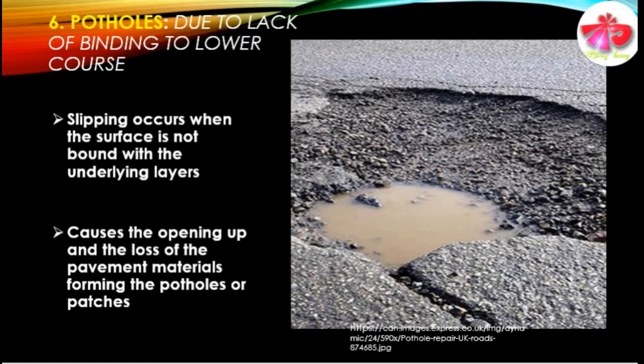The sixth type of defect in the flexible pavement is the formation of potholes. Potholes are formed due to lack of binding to the lower courses. Slipping occurs when the surface course is not keyed, that is not bound with the underlying base, resulting in the opening and loss of pavement materials forming patches and potholes. These conditions are more frequent when bituminous surfacing is provided over existing cement concrete or soil cement base course, and are more pronounced when there is a lack of prime or tack coat between the layers.